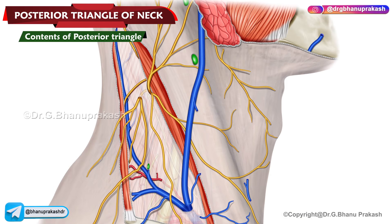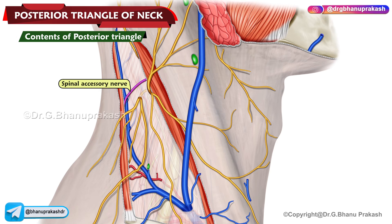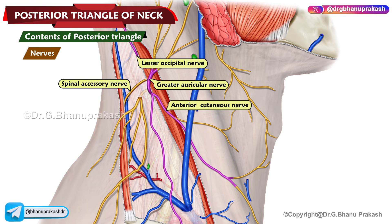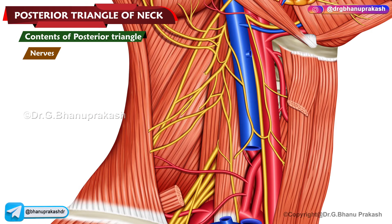Contents of the posterior triangle are classified under the occipital triangle and the subclavian triangle. The occipital triangle contains nerves like the spinal accessory nerve and four cutaneous branches of the cervical plexus, namely the lesser occipital nerve, the great auricular nerve, the anterior cutaneous nerve of the neck, and the supraclavicular nerves. Certain muscular branches are also given off in this triangle.